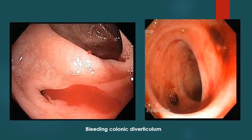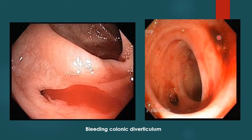Here is a colonoscopic picture of a bleeding diverticulum — blood pushes out through the ostium or mouth. Another picture shows multiple diverticula in the colon which have stopped bleeding, with evidence of stopped bleeding visible at their openings.